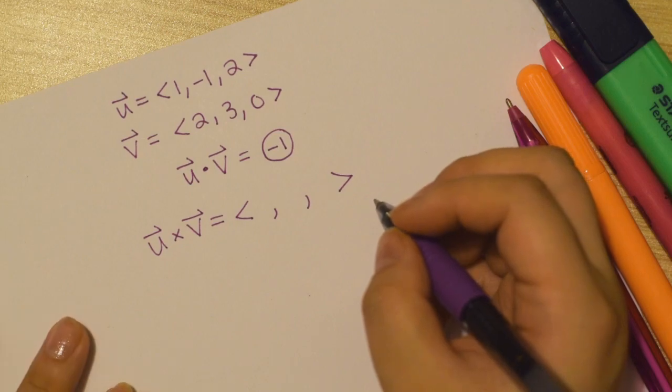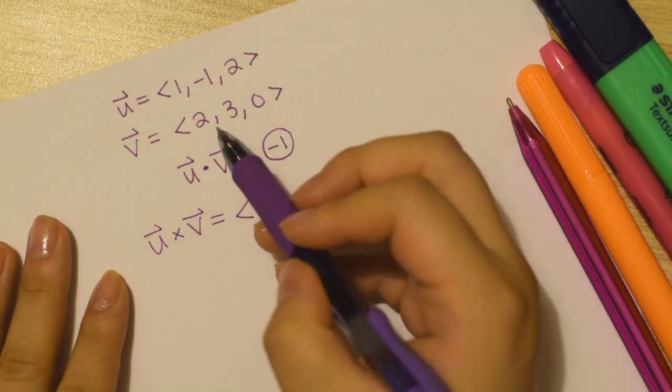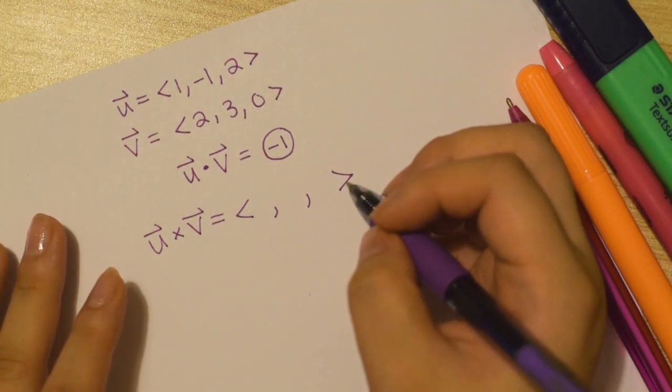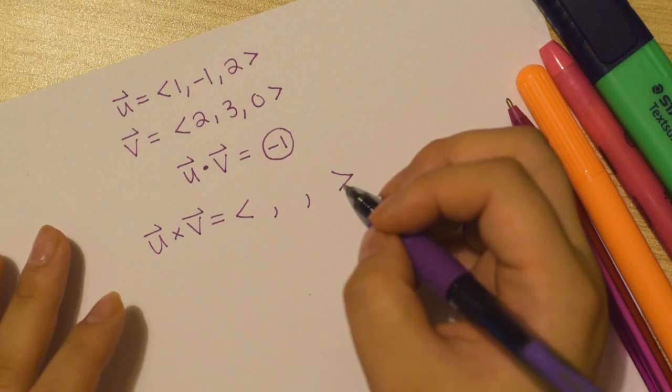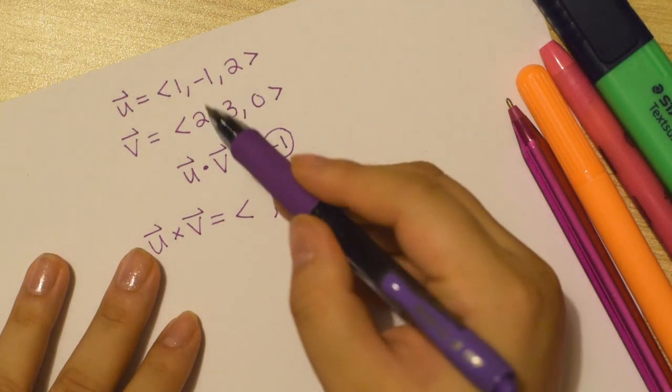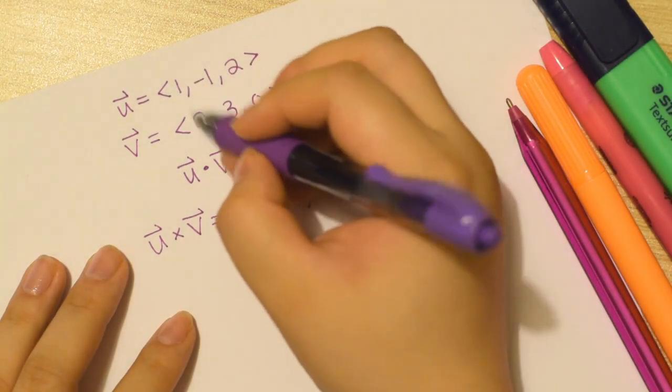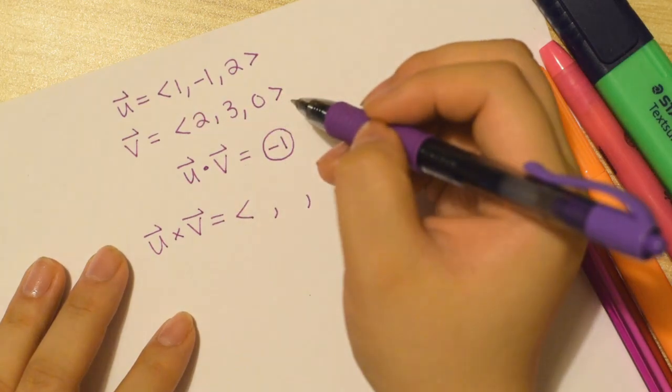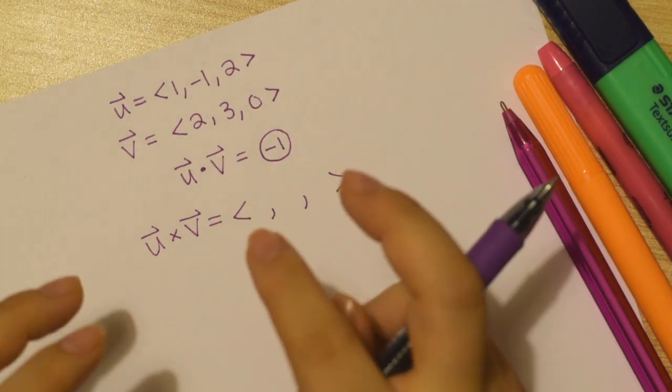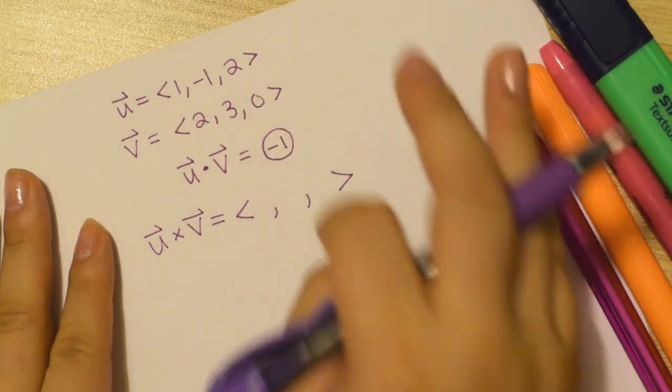So right off the bat I'm going to point out and remind us that this cross product is not just going to be 1 times 2 is 2, comma negative 1 times 3 is negative 3, comma 2 times 0. So it's not, not, not 2, negative 3, 0. Even though it seemed like it should be.